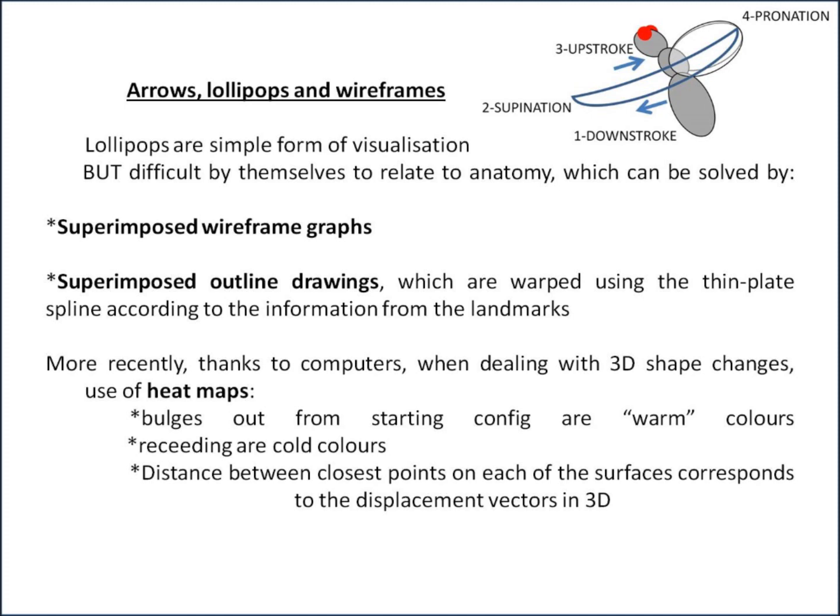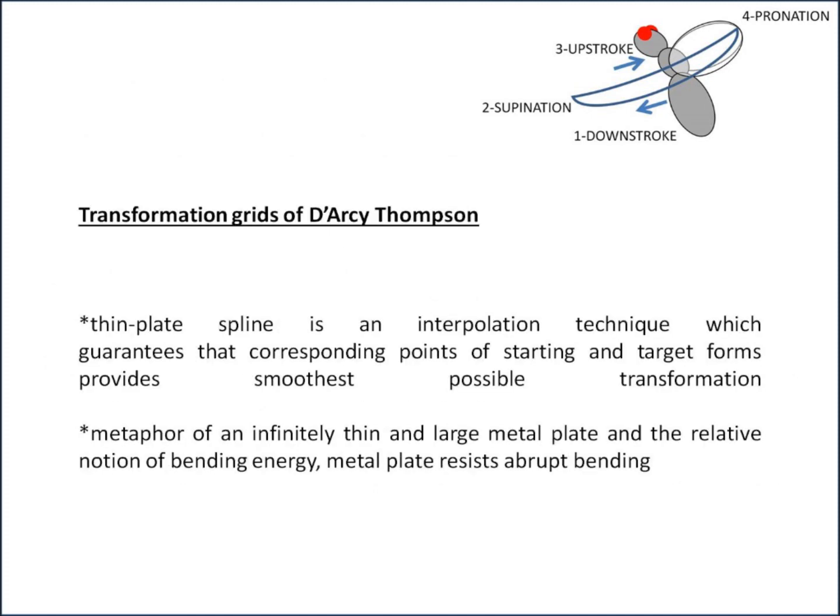More recently, thanks to advances in computing technology, when dealing with 3D shape changes you can use heat map graphs: bulges from the starting configuration are shown in warm colors, while receding or negative bulges are shown in cold colors. The distance between the closest points of each surface corresponds to the displacement vectors in 3D.